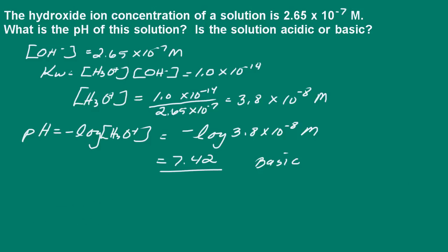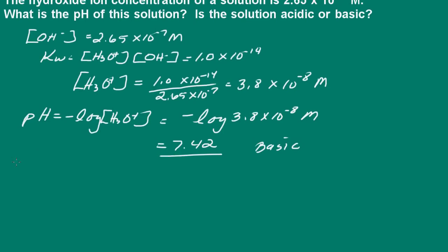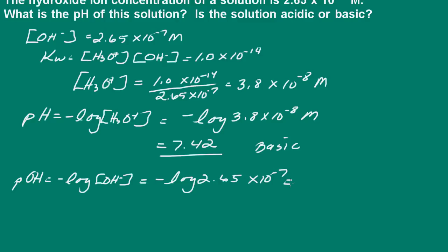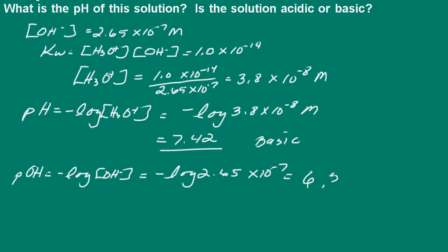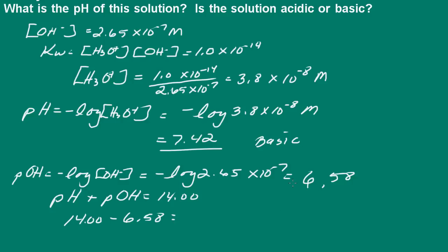I could have done this problem another way. What I could have done is determined the pOH from the given hydroxide ion concentration. The pOH would just be the negative log of the hydroxide ion concentration — that's the negative log of 2.65 times 10 to the negative 7 — which gives us a pOH of 6.58. Recall that pH plus pOH equals 14, so the pH would be 14 minus 6.58, and again I get a pH of 7.42. Two different ways to do the same problem.